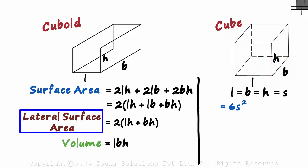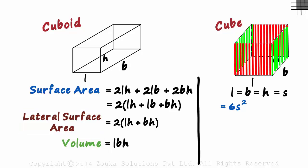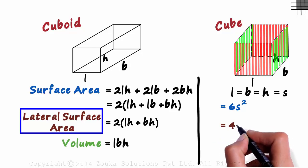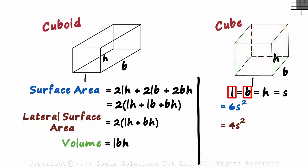What will be the lateral surface area and the volume then? As it has four faces on the side, its lateral surface area will be 4S squared. As L, B, and H are all equal to S, the volume of a cube will be side cubed.